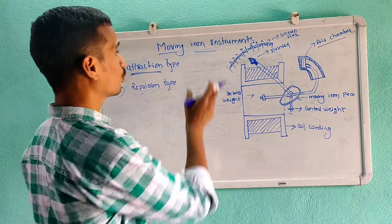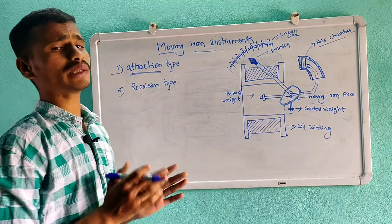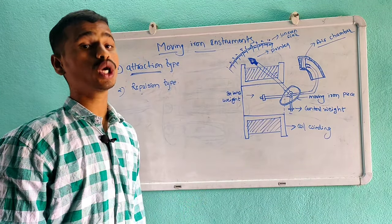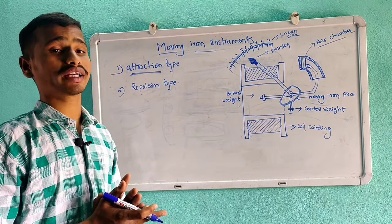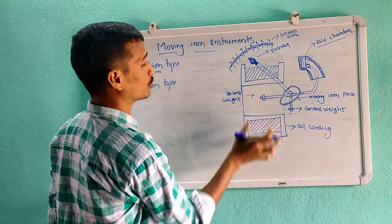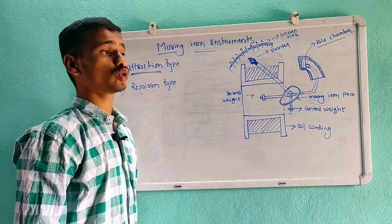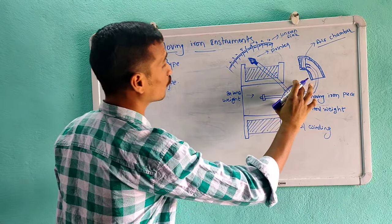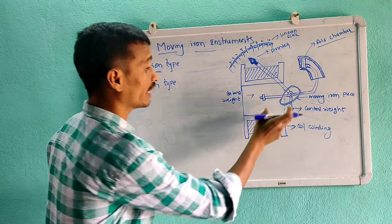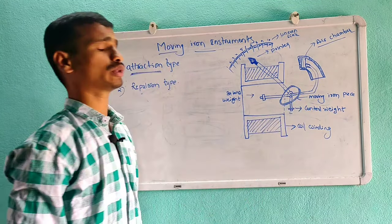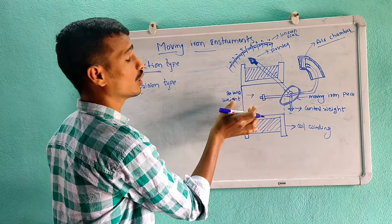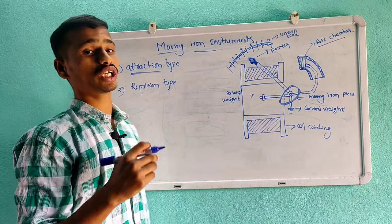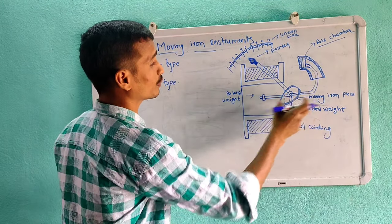When supply is connected, current flows through the fixed coil. It will act like an electromagnet, generating magnetic flux around it. This flux will attract the iron piece, causing it to deflect — this is the attraction principle. The deflecting torque is generated by the current flow, causing the mobile iron piece to move.